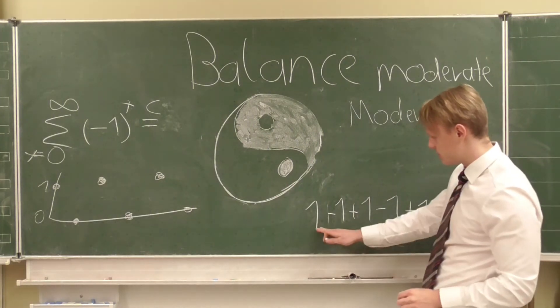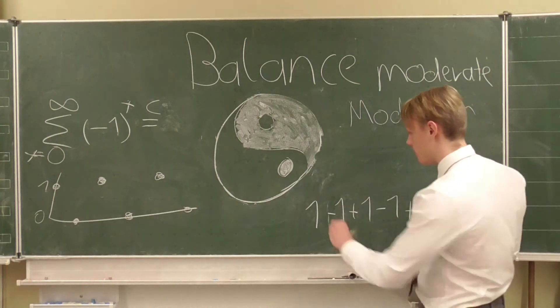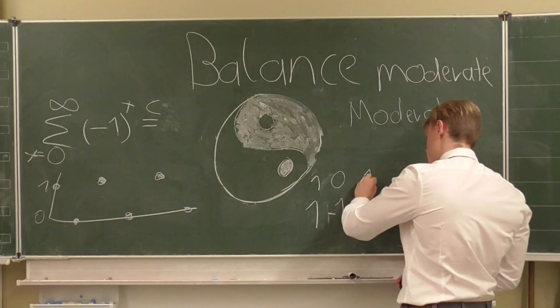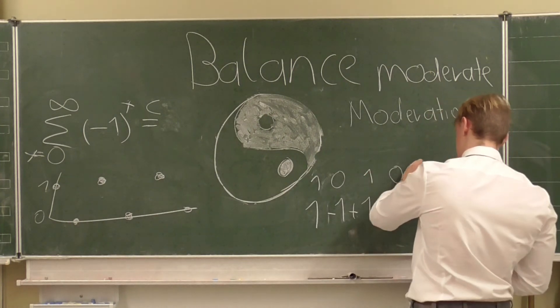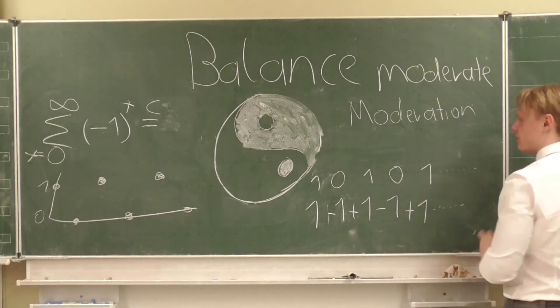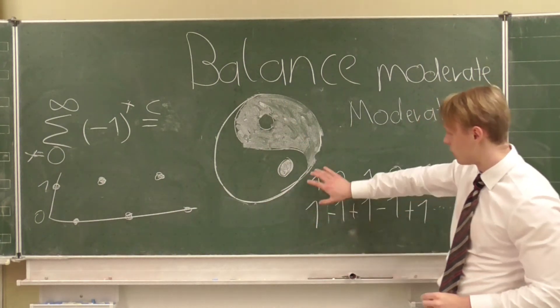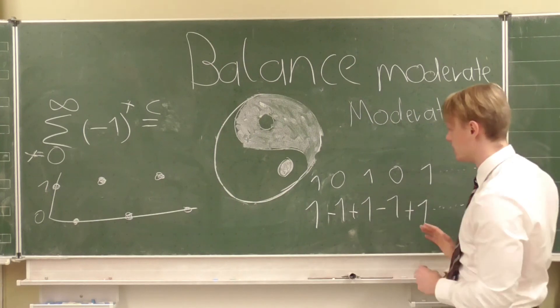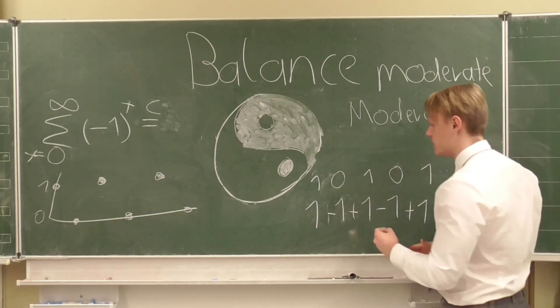This means that if we look at the sum we have one and zero and one and zero and one and so on and so forth. With this Cesaro conversion we are now looking at the averages of our series, of the sum of our series.